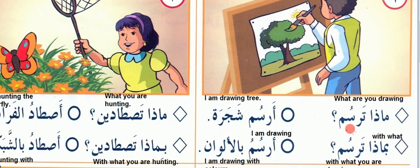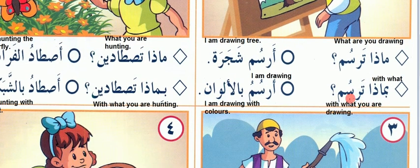Mazat Tarsum — what you are drawing. Tarsum means drawing. Arsum Shajra — I am drawing the tree. Mazat Tarsum — Bimaza, by what or with what you are drawing? Arsumu Bilalwaan — I am drawing with the colors. Ba means with or by.